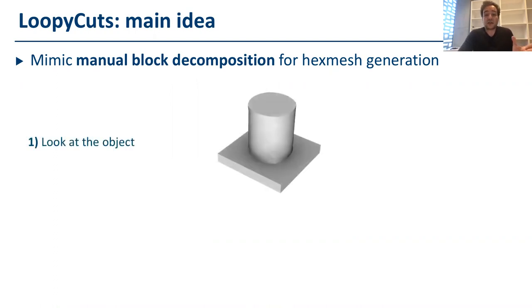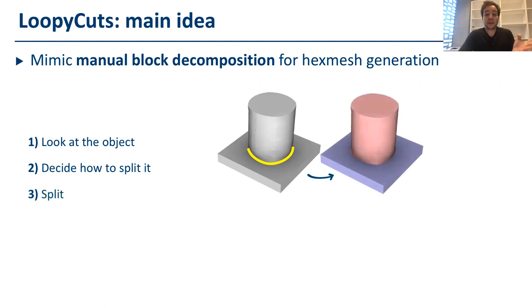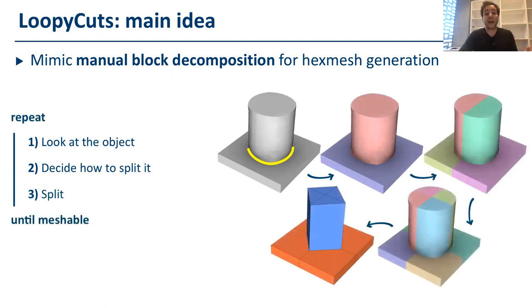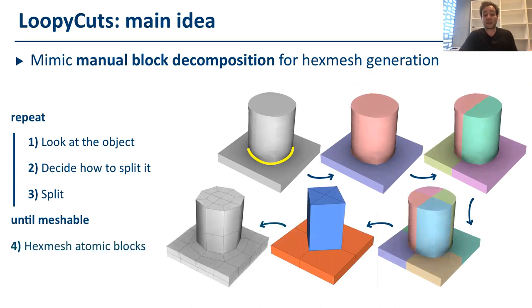What the human does is they start initially visualizing the shape of the object, then identify the suitable set of splitting loops to cut the object into pieces, and then split the volume. And repeat this process until it's possible to get the final hex mesh by performing a subdivision step.